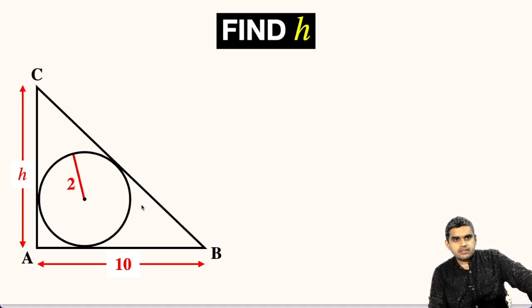In this question a triangle ABC is given. The measure of one of its side AB is given as 10 units.